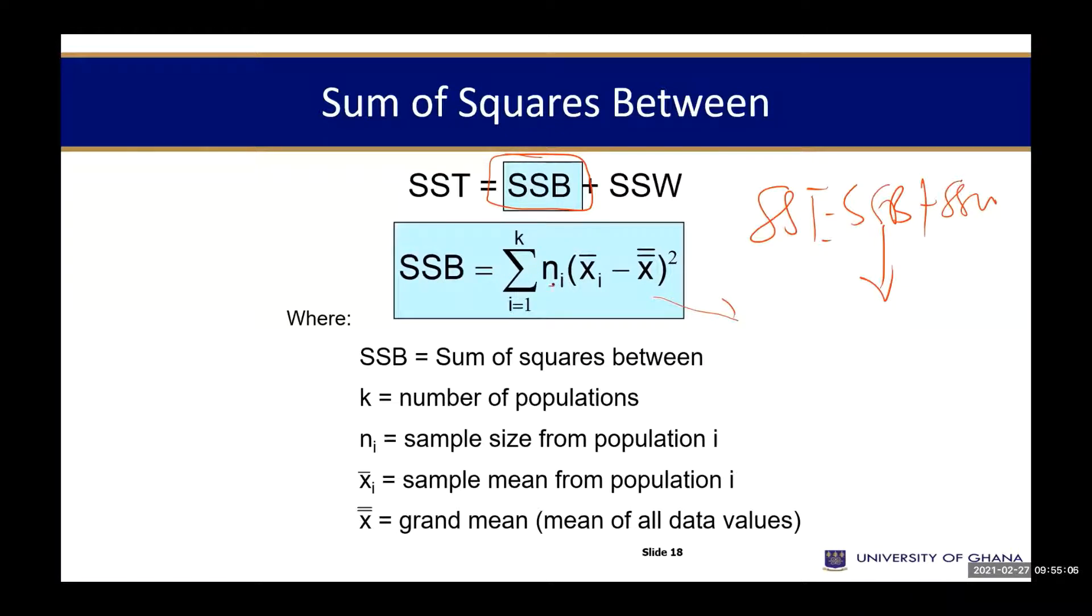SSB is giving us this formula here. Summation N, we know N already, that is the sample size. And we say that X bar, we know X bar is the sample mean. I goes to first population, second population, third population. Then the grand mean is X bar bar. The addition of X bar 1 plus X bar 2 plus X bar 3 divided by K. That is the whole information here.